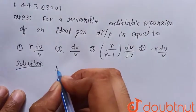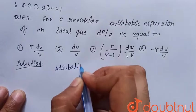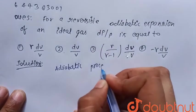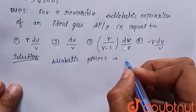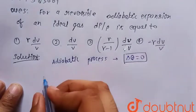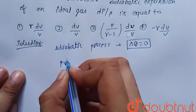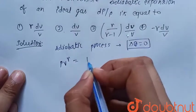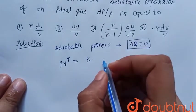So we know that first we have to define what is the adiabatic process. For adiabatic process there is no heat gain or heat loss, so delta Q is equal to zero. And we know that for adiabatic process, PV to the power gamma is equal to constant.